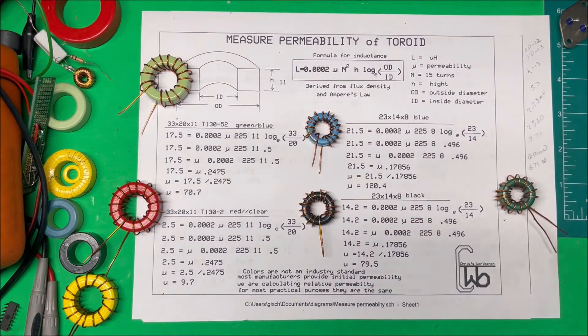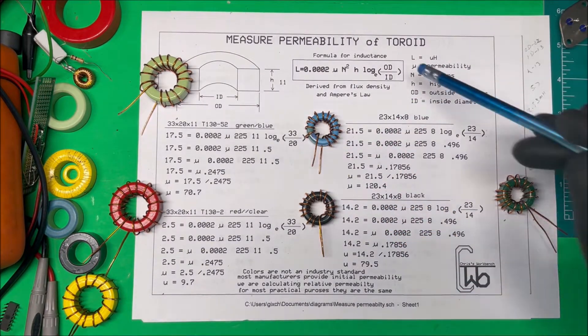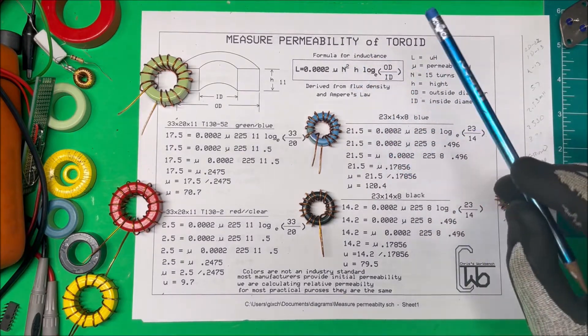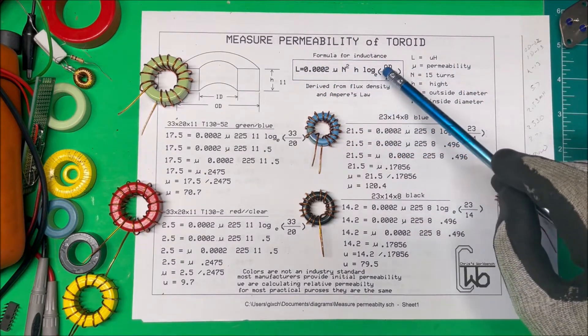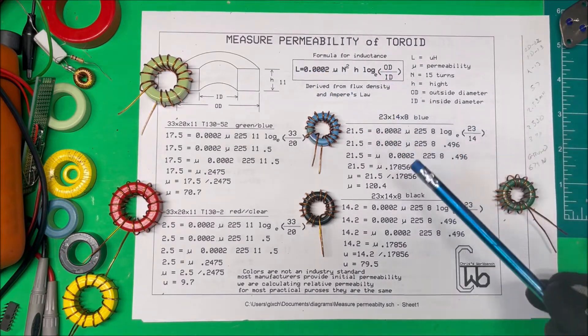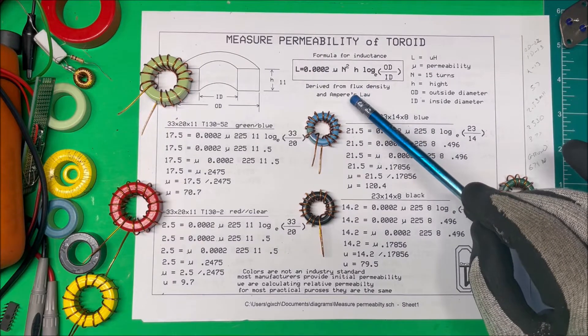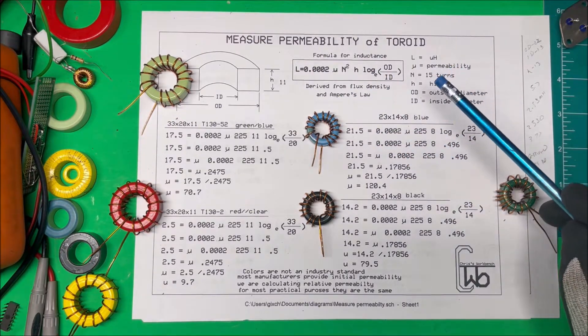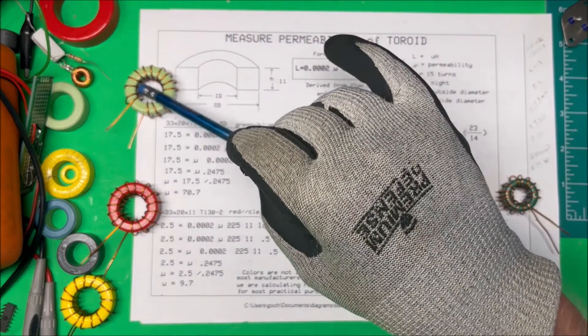Now we're going to measure the inductance with a meter, and we know the dimensions and we know the number of turns. In this case it's 15, so we can calculate the permeability with this formula here. This was derived from a formula for flux density using Ampere's law. We're going to see if this formula works by testing a couple known coils here.